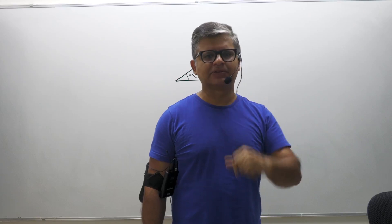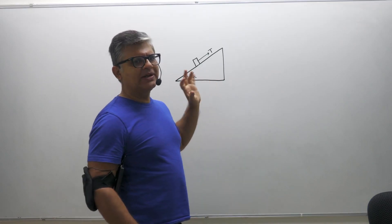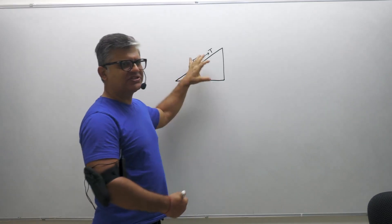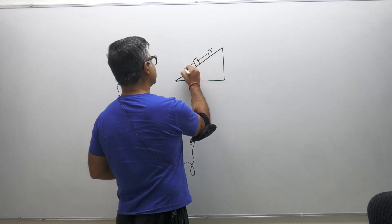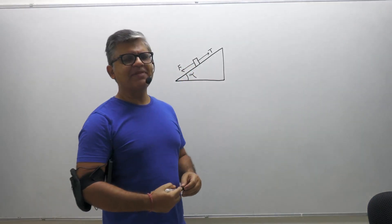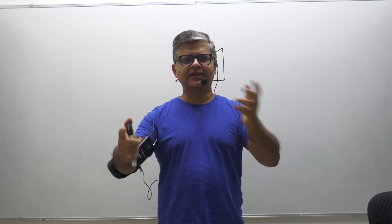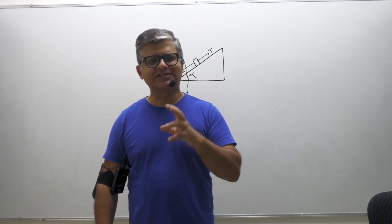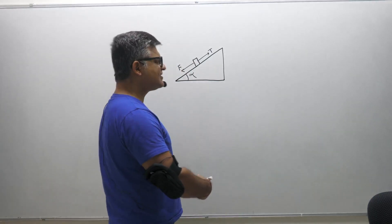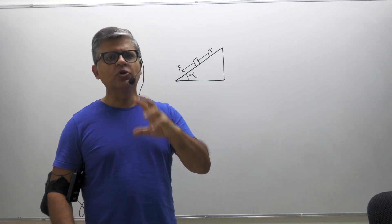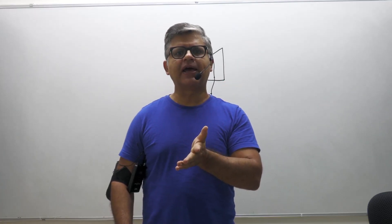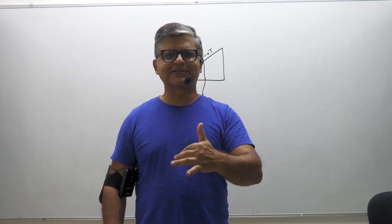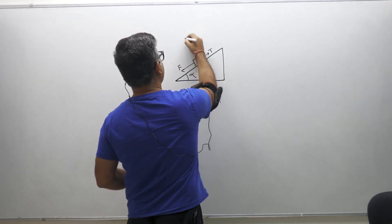What are the possible values of tension which will hold the block in place? Now, on an inclined plane there is friction, represented by F. The first step whenever you encounter an inclined plane is to do resolution of forces into perpendicular and parallel components. Choose your axes correctly: one axis becomes the x-axis and the other becomes the y-axis.